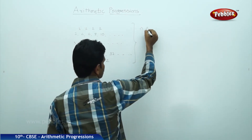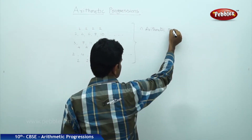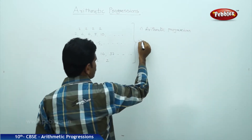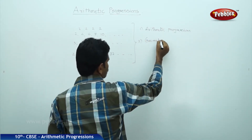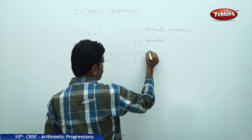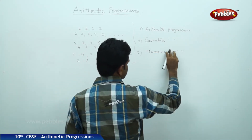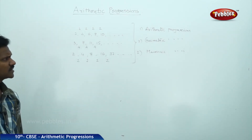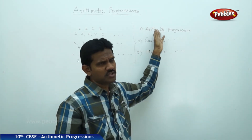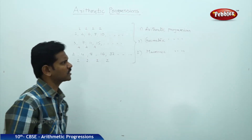There are three types: first, arithmetic progressions; second, geometric progressions; and third, harmonic progressions. In this session we are discussing only arithmetic progressions. Geometric progressions and harmonic progressions we will study in our further classes.